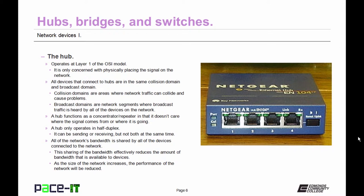Because of this, a hub can only operate in half duplex. It can be sending data or receiving data, but it can't do both at the same time. All of the network bandwidth that the hub receives is shared by all of the devices connected to that hub. This sharing of the bandwidth effectively reduces the amount of bandwidth available to each device. As the size of the network increases, the performance of the network will be reduced.